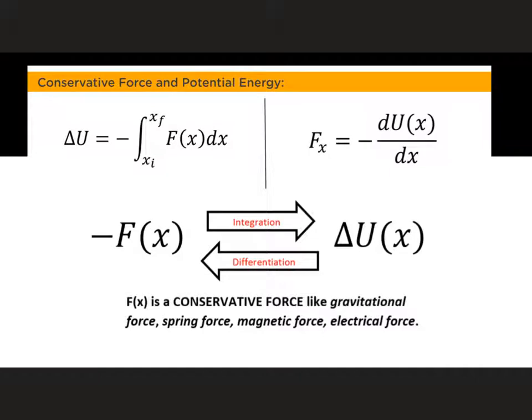The relationship of conservative force and potential energy can be expressed in the following equation. First, the change in potential energy is equal to the negative of the integral of the conservative force Fx with respect to dx from initial position to the final position. On the other hand, this also tells us that the conservative force is equal to the negative of the derivative of our potential energy as a function of position with respect to position.